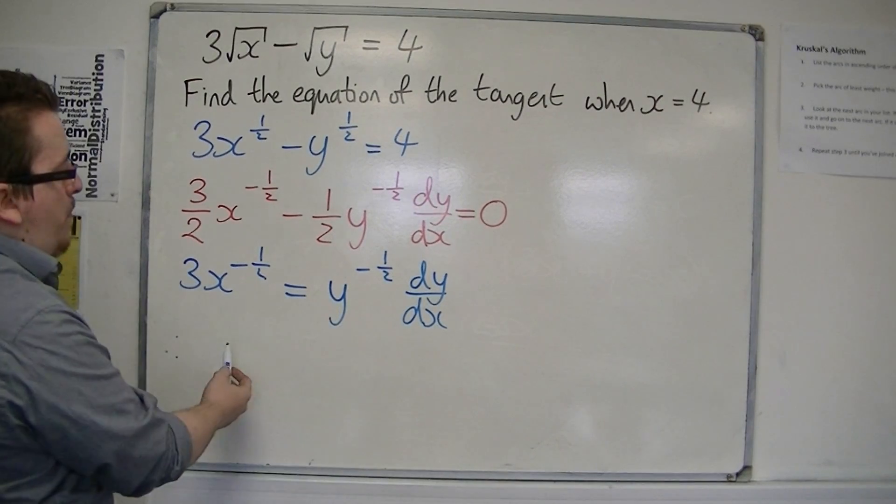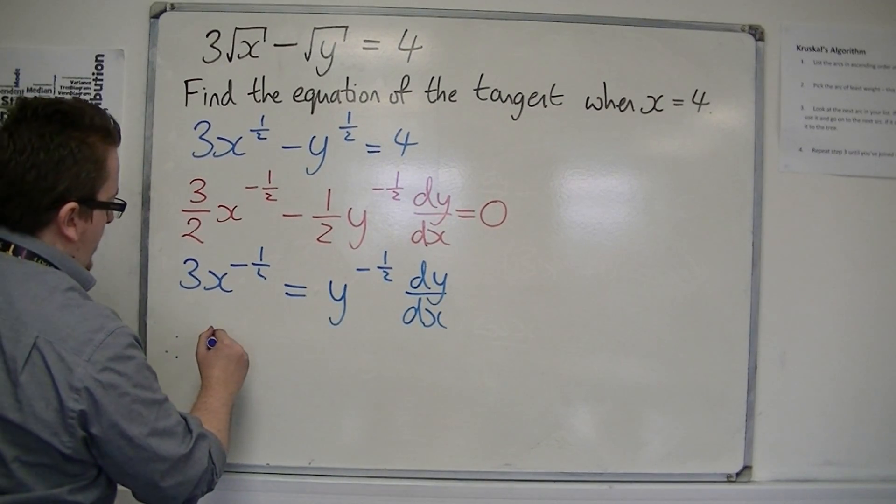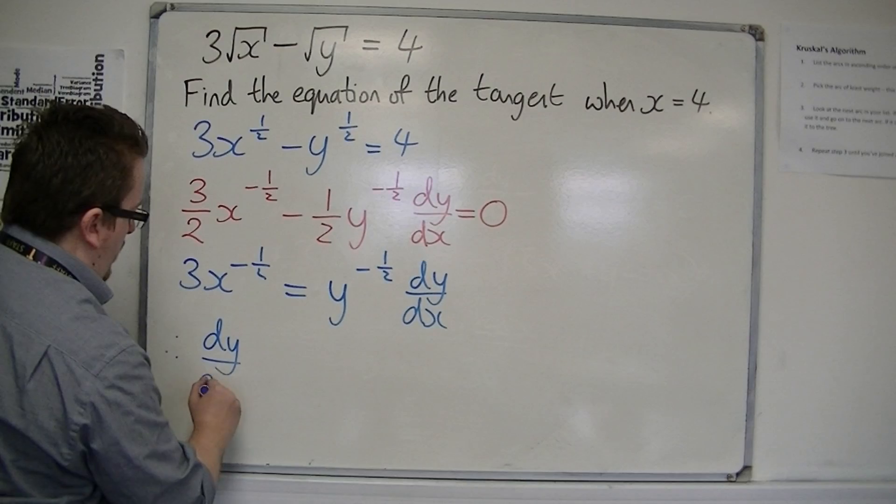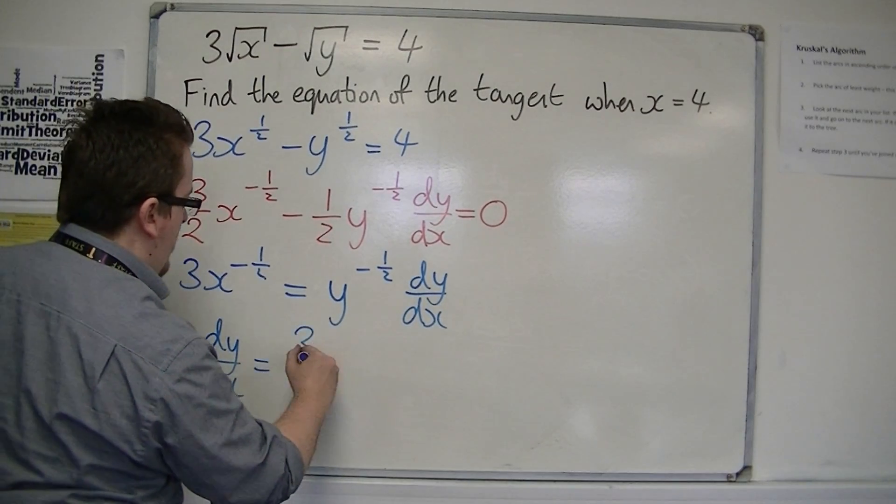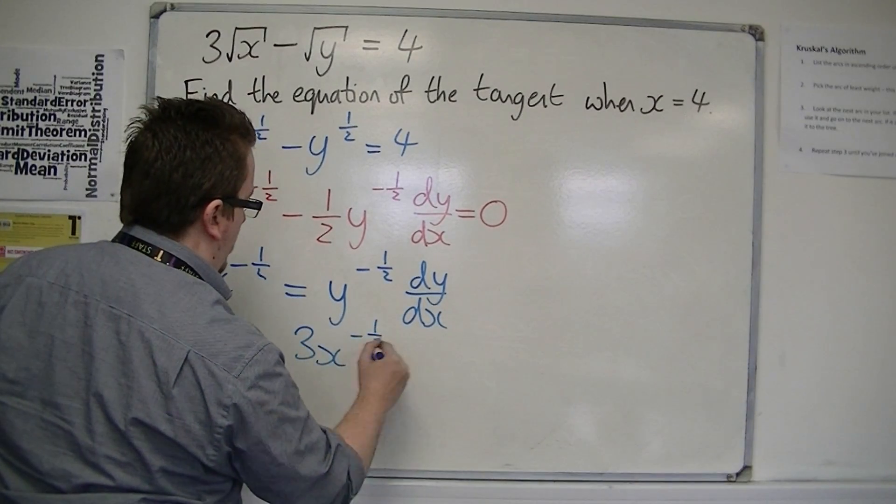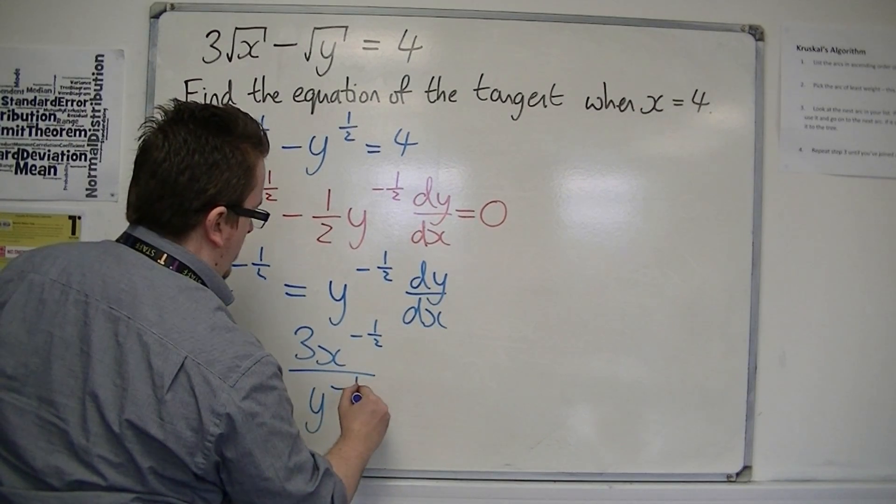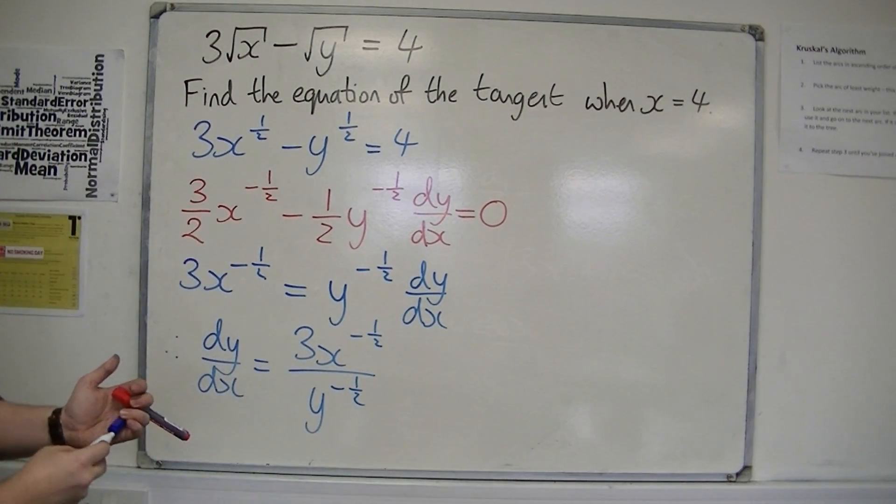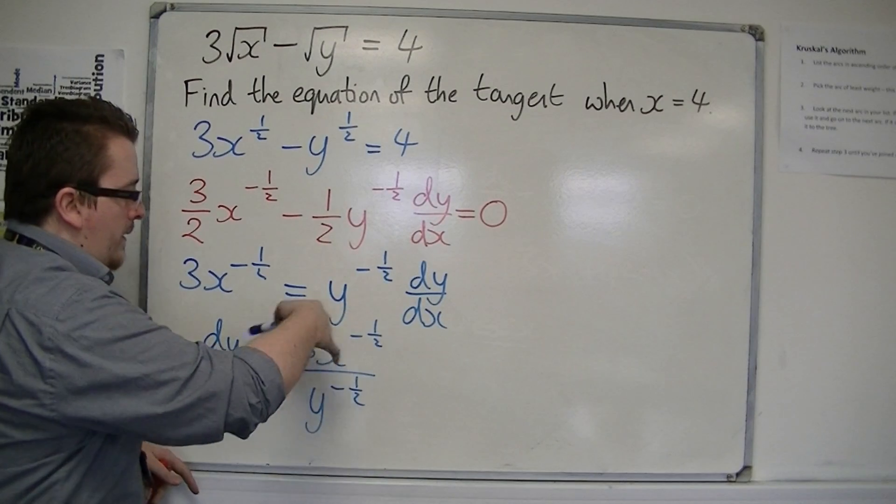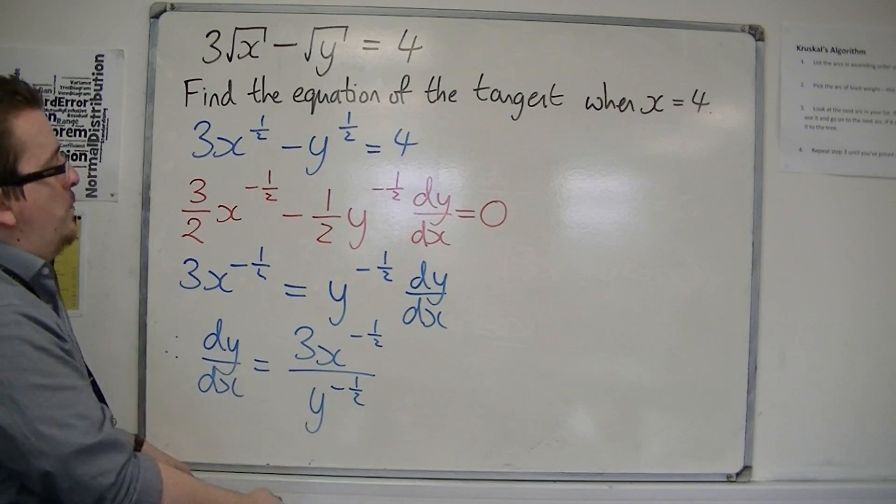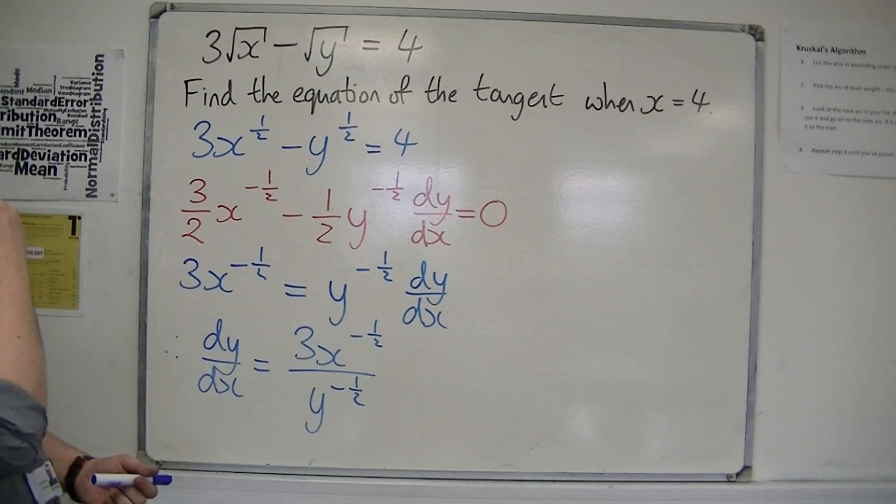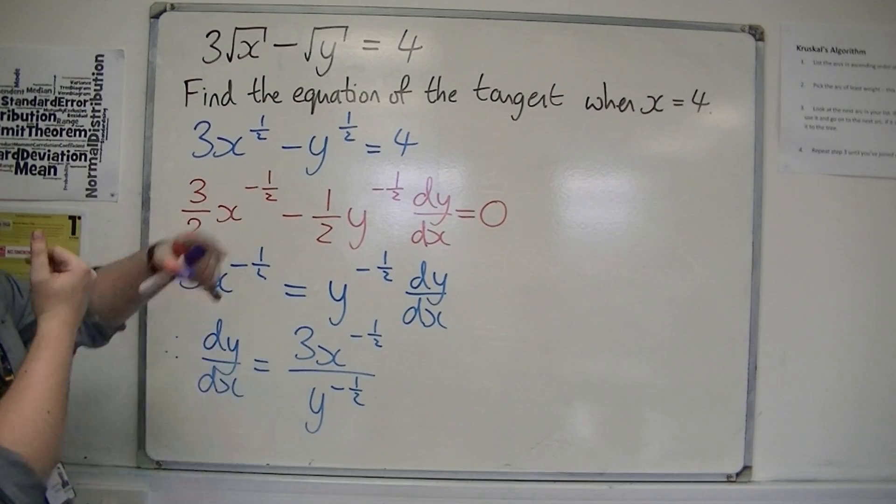So then if I divide through by y to the minus 1 half, I have dy by dx is equal to 3x to the minus 1 half over y to the minus 1 half. So this is my first derivative, dy by dx, which I can now use to find the gradient of the tangent.